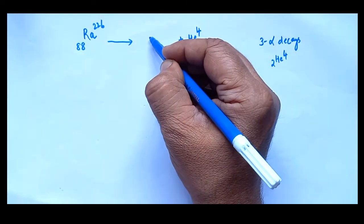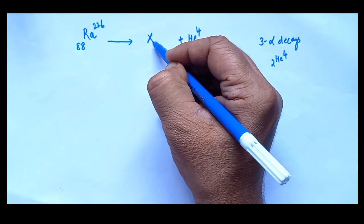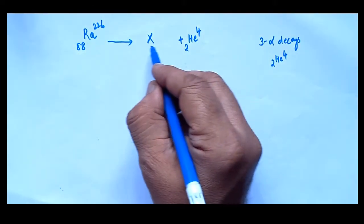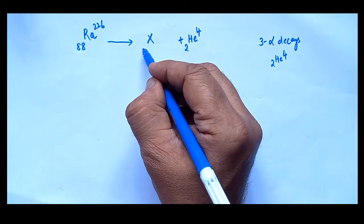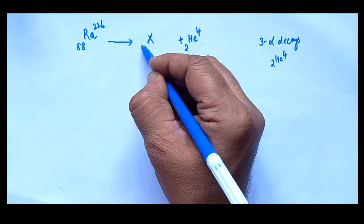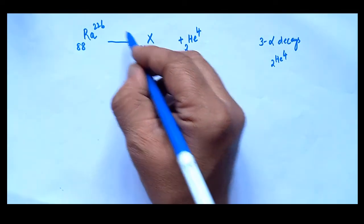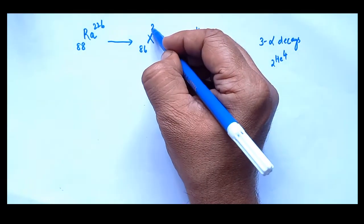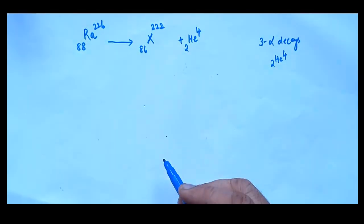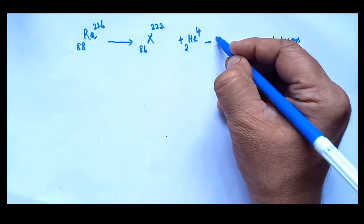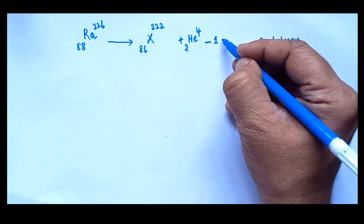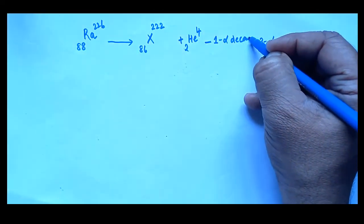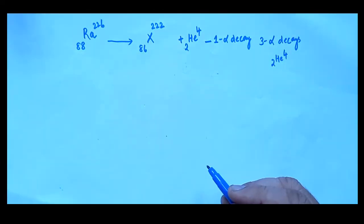The first daughter element can be called X. We know that atomic number reduces by 2 units — after balancing, you get 86. The mass number is reduced by 4 units, giving 222. This completes the first alpha decay process.